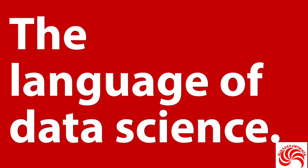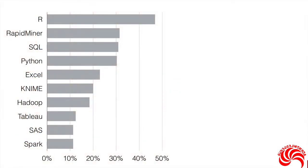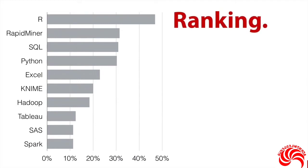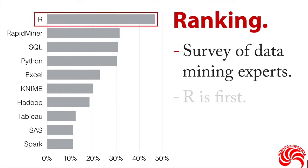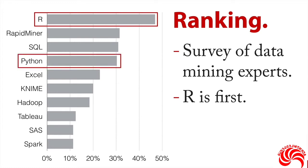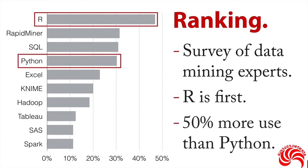It's arguably the language of data science. And just so you don't think I'm making stuff up off the top of my head, I have some actual data. This is a ranking from a survey of data mining experts on the software that they use most often in their work. Take a look here at the top — R is first. In fact, it's 50% more than Python, which is another major tool in data science. Both of them are important, but you can see why I personally am fond of R and why it's the one I want to start with in introducing you to data science.